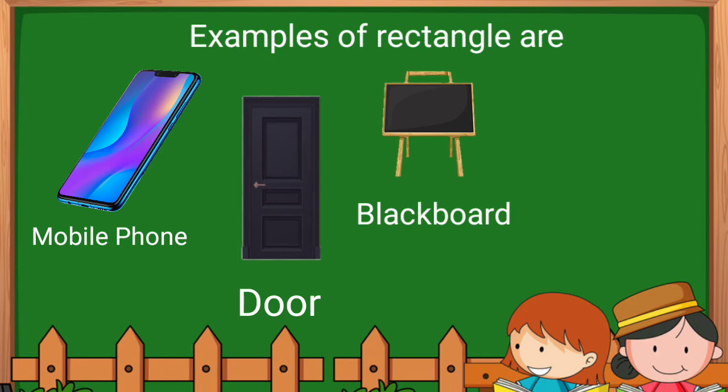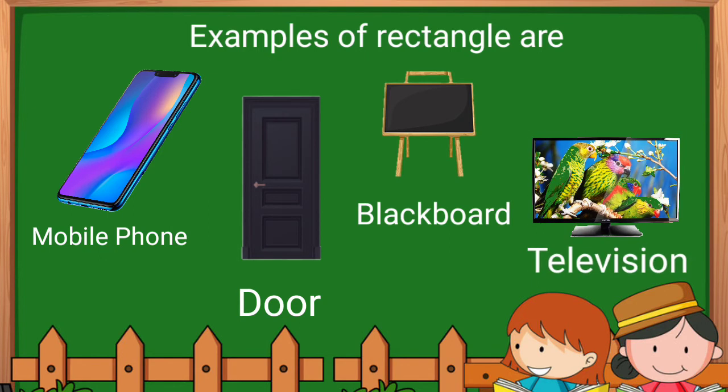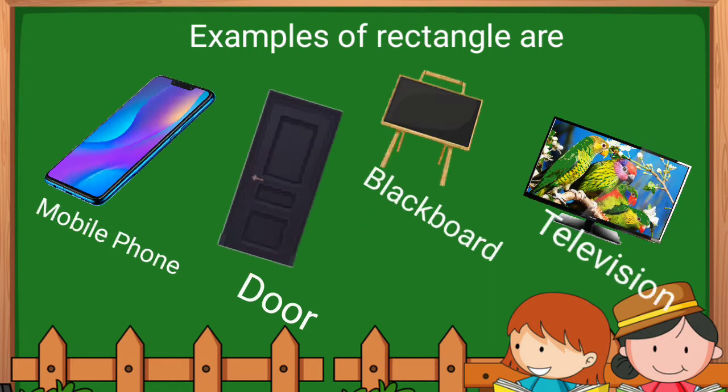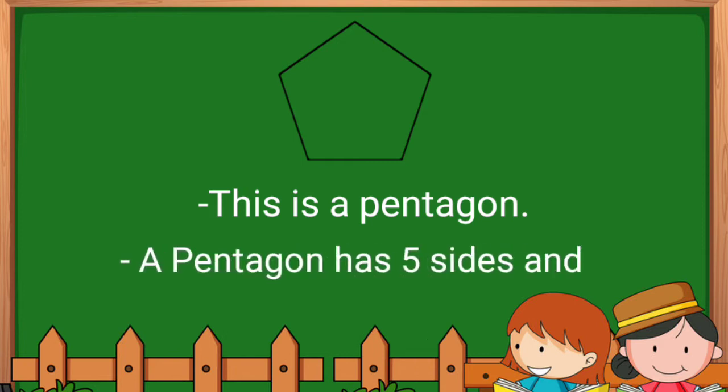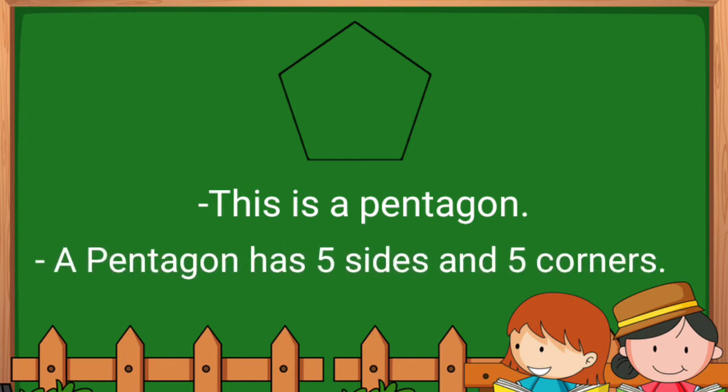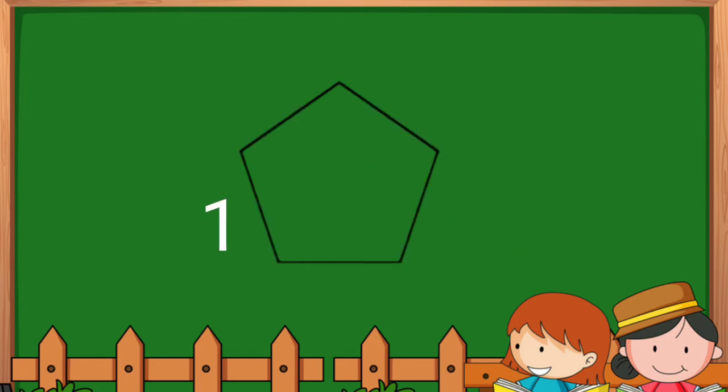Pentagon. This is a pentagon. A pentagon has five sides and five corners. Let's count: one, two, three, four, five - five sides.